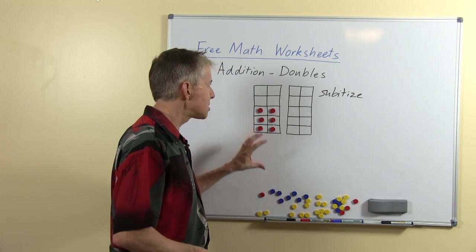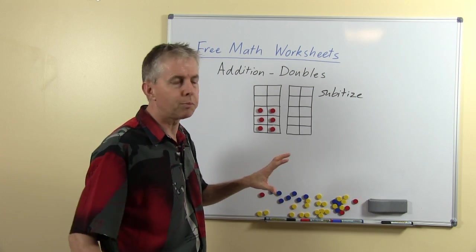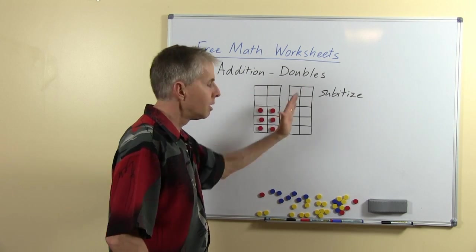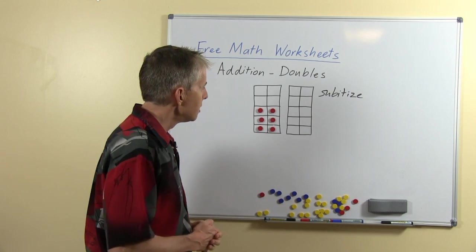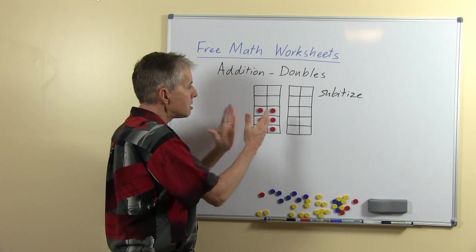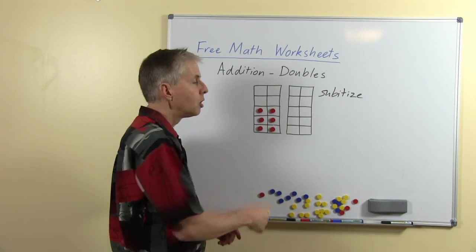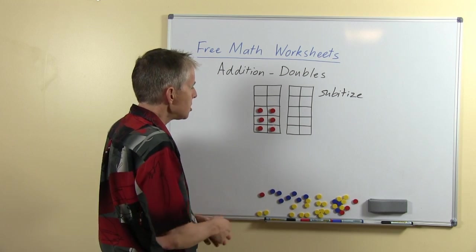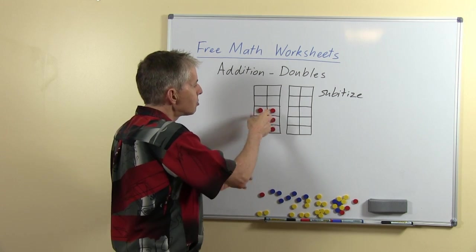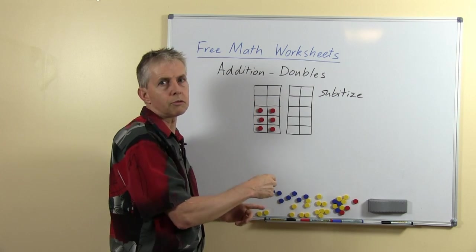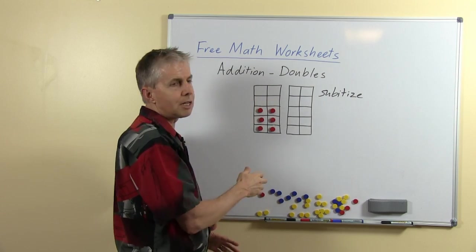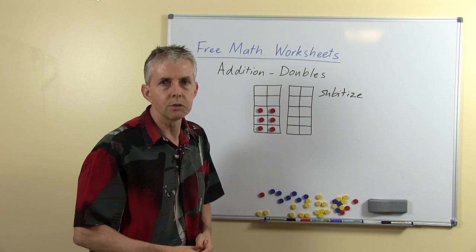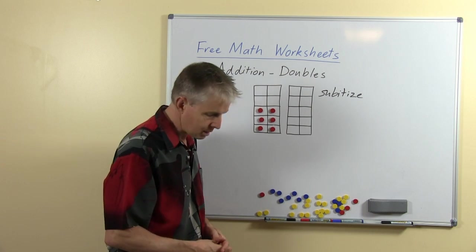The 10 frames are used for this exact purpose to help students recognize specific patterns up to 10 and then beyond that up to 20. So they will become familiar that this is a pattern that shows six without counting the individual counters. They should be able to see that double three, two rows of three, fill up that much of the 10 frame. There are four left and so they will associate double three with six using the 10 frame.